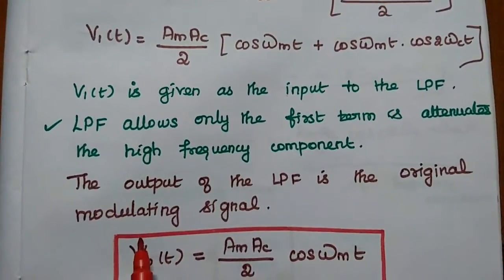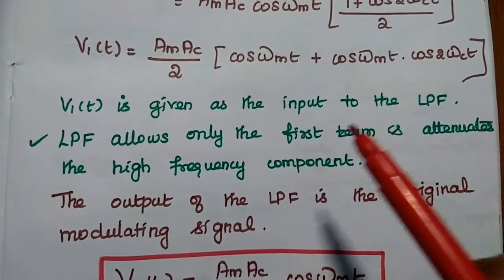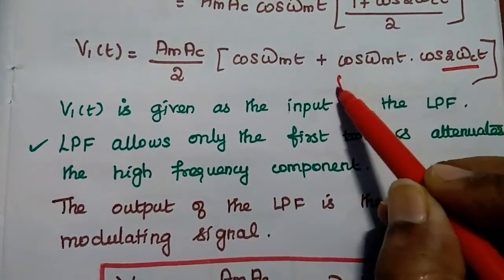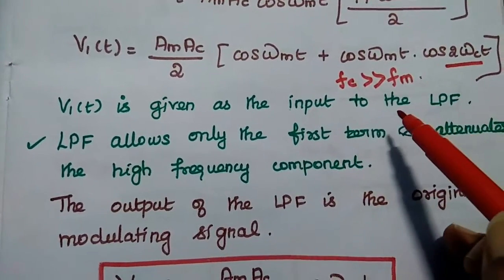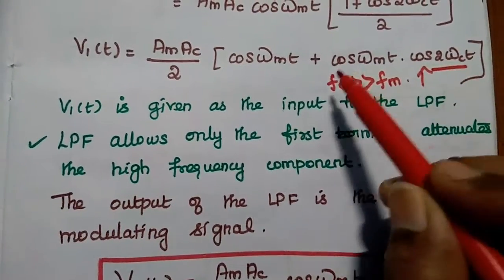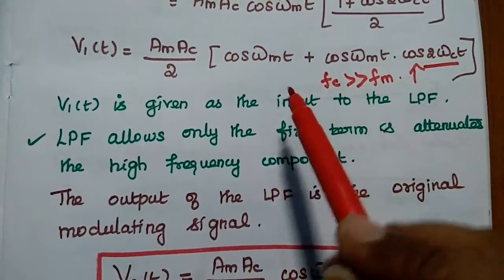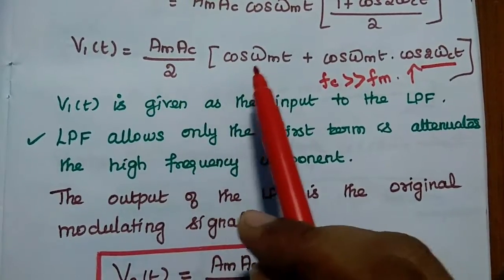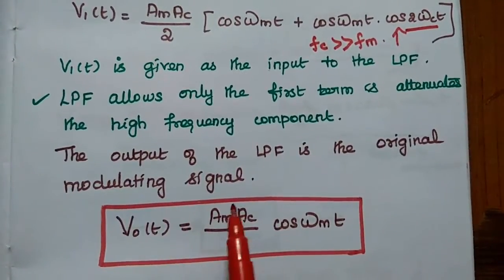The low pass filter allows only the first term and attenuates the high frequency component. Since the carrier frequency is far greater than the modulating frequency, twice the carrier frequency is a very high frequency component and is not allowed through. The low pass filter allows only (A_M · A_C / 2) · cos(ωM·t), which is the original modulating signal.